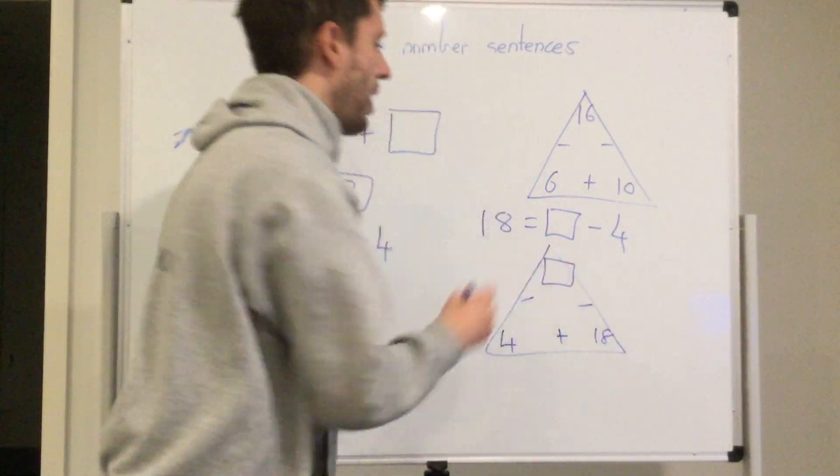So I'm going to rewrite that: 18 equals something take 4. Now if I'm going to do my triangle, remember to get the original I need to add what I've taken to my answer, so 4 and 18, and that will give me my answer, the missing number. So 4 plus 18 equals 22, because 22 take 4 equals 18 and 22 take 18 equals 4.